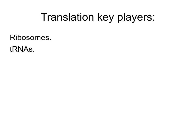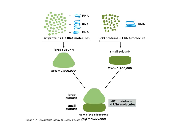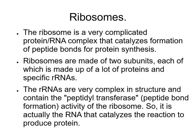A few words about key players in translation — ribosomes and tRNAs. Ribosomes consist of two subunits, large and small, each made of RNA and proteins. The large subunit has about 49 proteins and three RNAs; the small subunit has about 33 proteins and one RNA. The two subunits join together to form the active ribosome. Importantly, the peptidyl transferase activity — peptide bond formation — is actually a ribozyme: it's the RNA that catalyzes the reaction.